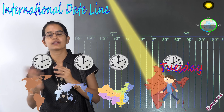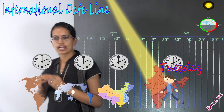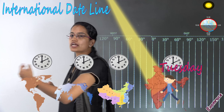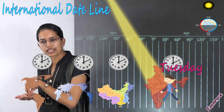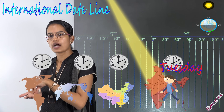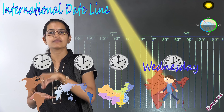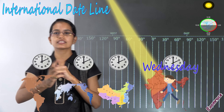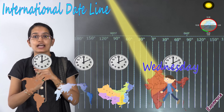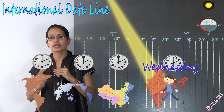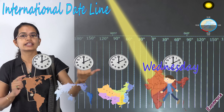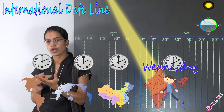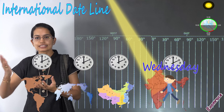So it should be 2 pm again in India. If I started at 2 pm Tuesday, it should again be 2 pm Tuesday when I reach India — but he found that the time was 2 pm Wednesday. Now where did this date suddenly change? Because if I am moving with the light continuously, there shouldn't be a point where the date abruptly changes.